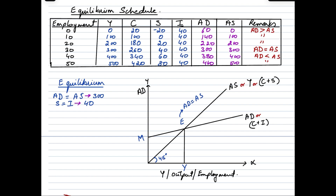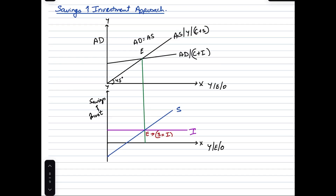Now let's look at how equilibrium is depicted under the savings-investment approach. The point of equilibrium we saw in the AD-AS approach corresponds to the same equilibrium point in the savings-investment approach. The graph has two panels: the first is what we just reviewed, and the second panel is our focus now — showing equilibrium aligned between both approaches.